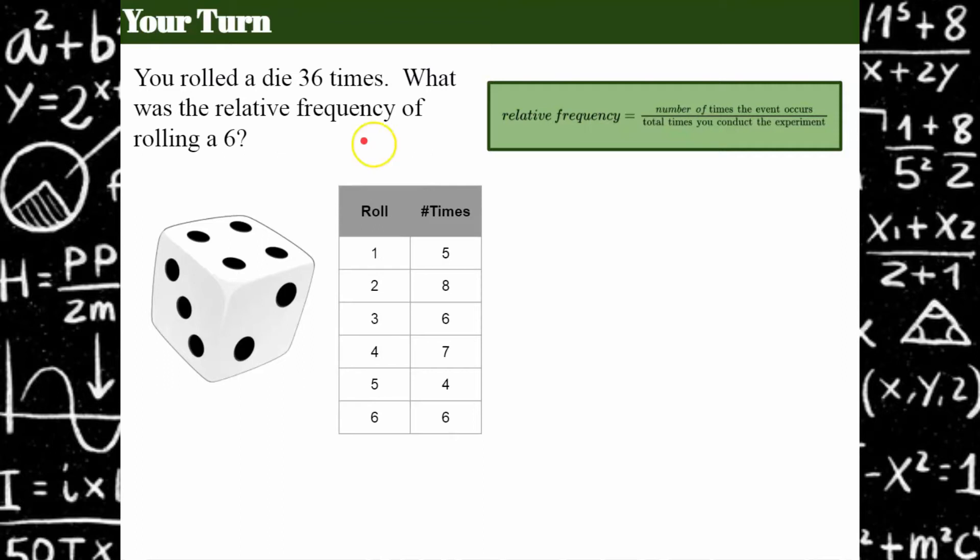Welcome back. Let's see how you did. I'm going to go down to my data table, and the number of times I rolled a 6 was 6. So 6 out of 36 times equals 1 out of 6.